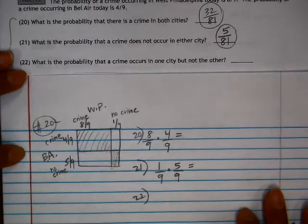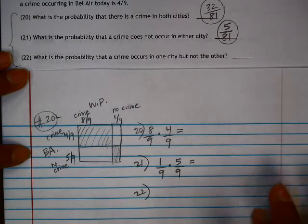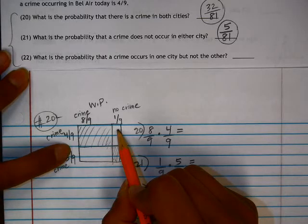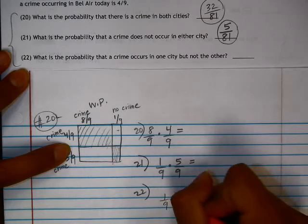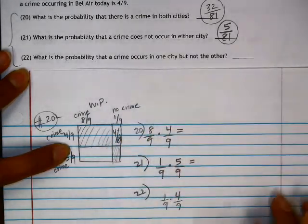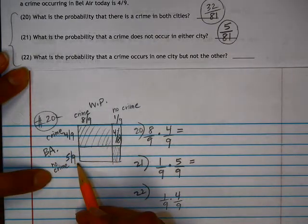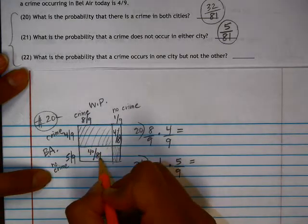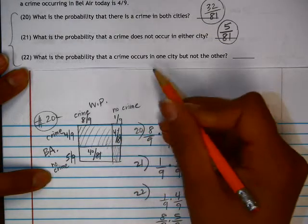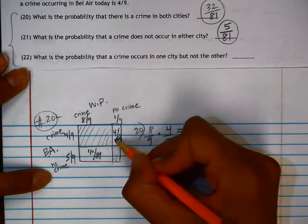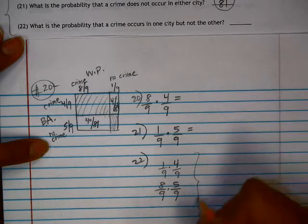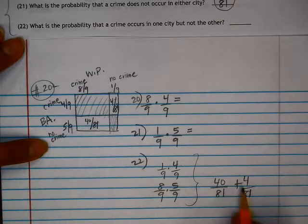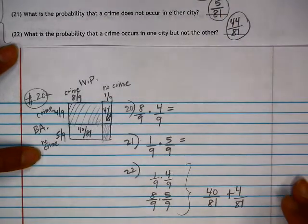Then on 22: what is the probability that a crime occurs in one of the cities but not the other? We have two different regions. No crime in West Philadelphia but crime in Bel Air: 1 ninth times 4 ninths is 4 out of 81. And crime in West Philadelphia but no crime in Bel Air: 8 ninths times 5 ninths is 40 over 81. Since both satisfy the requirement, we add them — 40 over 81 plus 4 over 81 equals 44 out of 81. I'll see you next time.